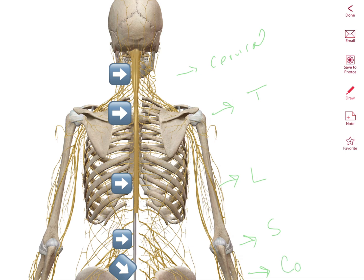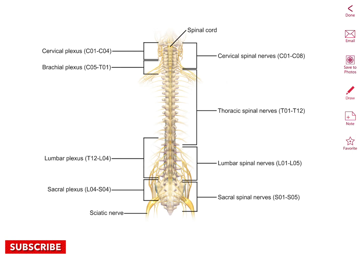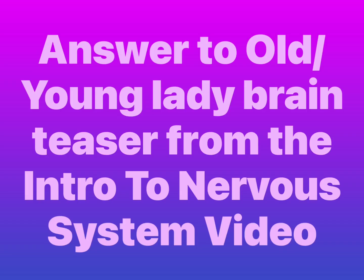You can observe two enlargements: the cervical enlargement and the lumbar enlargement. Similarly, spinal nerves are named depending on the region. We have eight cervical spinal nerves, twelve thoracic spinal nerves, five lumbar spinal nerves, five sacral spinal nerves, and one coccygeal spinal nerve.